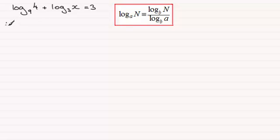So let's start then by taking this first term here. I'm going to change it to base 3. So if we do that then the n is the 4 and the a is the 9. So if I change it to base 3 this is going to be the log in base 3 of 4 divided by the log in base 3 of 9. Then we just copy that term in so that's plus the log in base 3 of x and that equals 3.